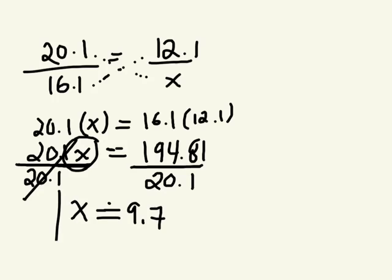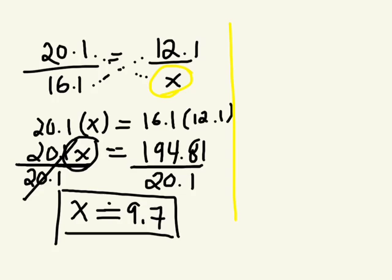And remember the symbol for approximately equal to? Looks like this. Approximately equal to 9.7. So this missing value here is approximately 9.7. But we're going to check our answer to see if that makes sense. Originally, we had the two sides that were corresponding.